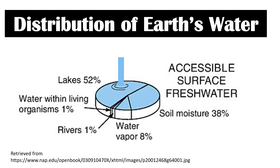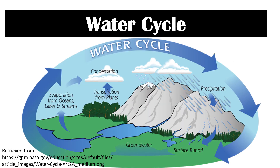Most of the surface fresh water is found in lakes at 52%, and 38% is in our soil. Although we only have a limited amount of fresh water, the water cycle provides our steady supply. The evaporation happening in our oceans exceeds the amount of rainfall it receives, which means most precipitation happens on land and just returns to our oceans as runoff.